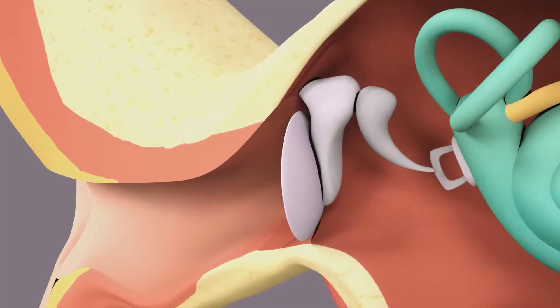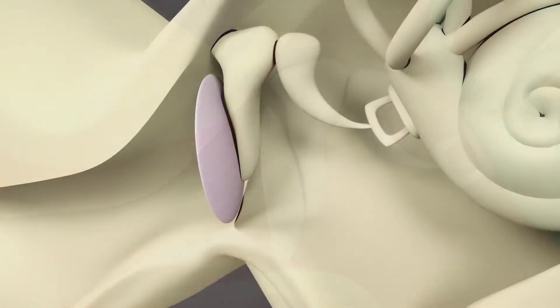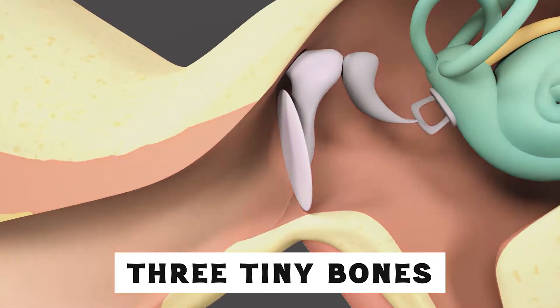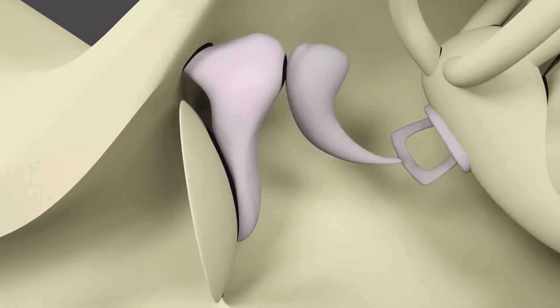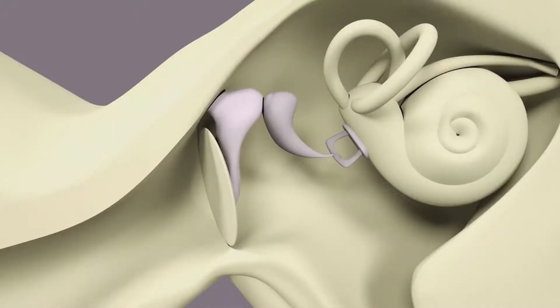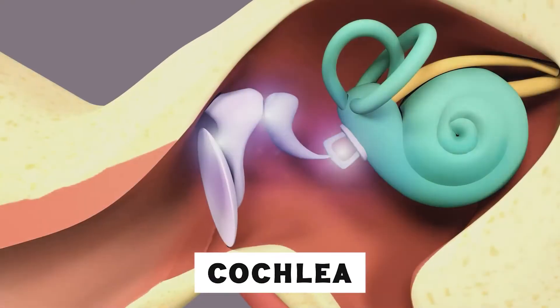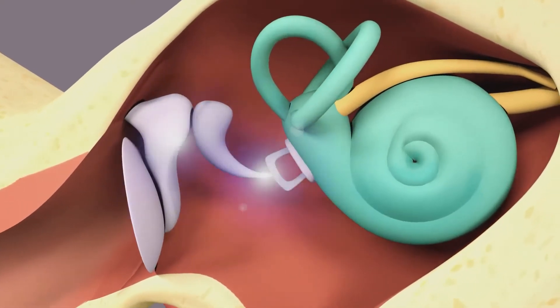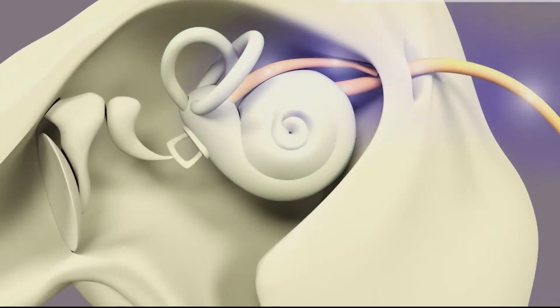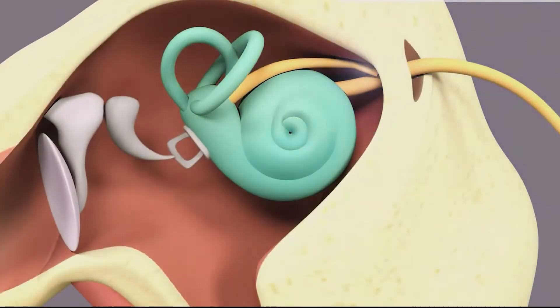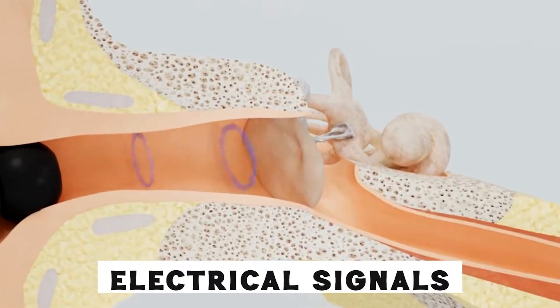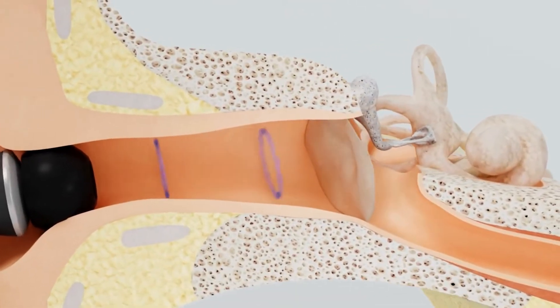Sound waves enter your ear and make your eardrum vibrate. The vibrations travel through three tiny bones in your middle ear which amplify the sound. The vibrations then reach the cochlea, a snail-shaped structure in your inner ear. Inside the cochlea, tiny hair cells move in response to the vibrations. These hair cells send electrical signals to your brain, which interprets them as sound.